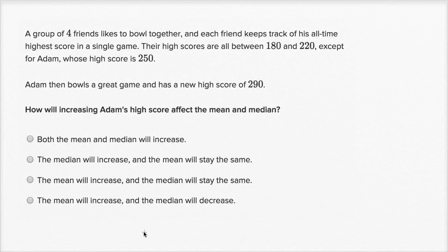Let's think about what happens to the median and mean of a set of numbers when I change one of the numbers. A group of four friends likes to bowl together, and each friend keeps track of his all-time highest score in a single game. Their high scores are all between 180 and 220, except for Adam, whose high score is 250. Adam then bowls a great game and has a new high score of 290. How will increasing Adam's high score affect the mean and median?